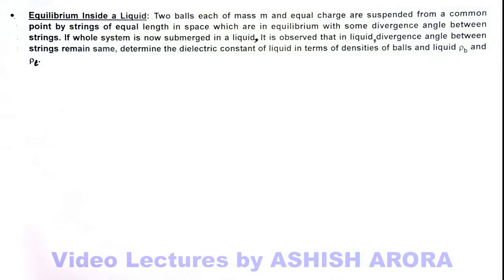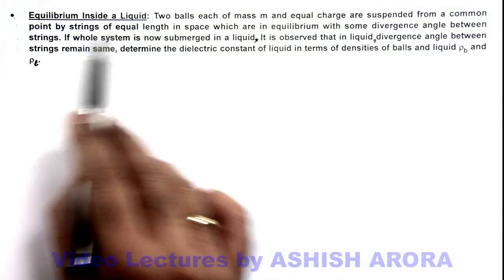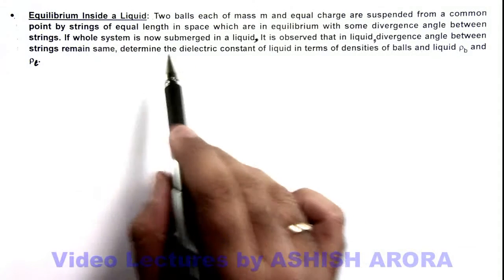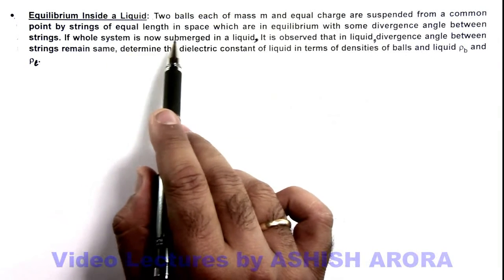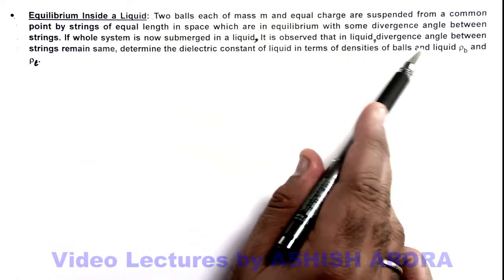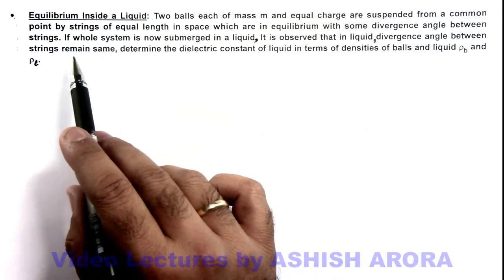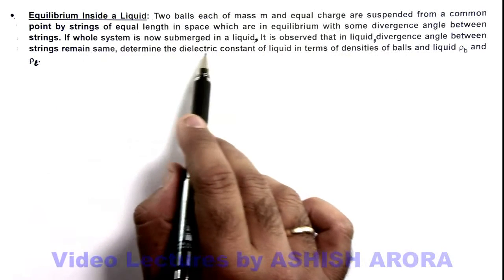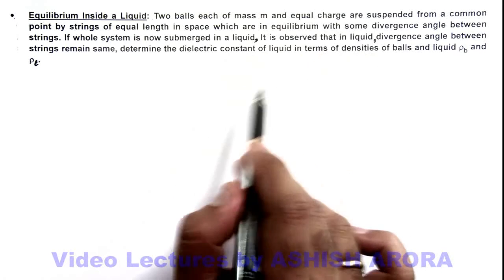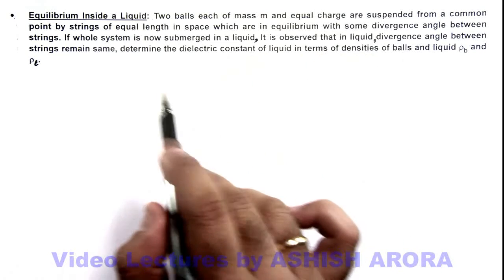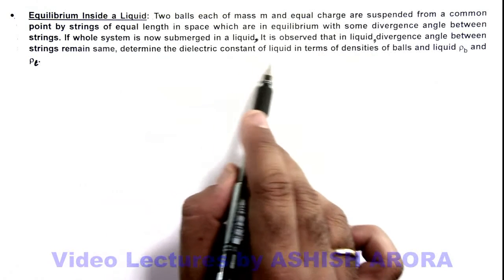In this illustration, we'll study about equilibrium inside a liquid. It is given that 2 balls, each of mass m and equal charges, are suspended from a common point by strings of equal length in space, which are in equilibrium with some divergence angle between the strings. If the whole system is now submerged in a liquid, it is observed that the divergence angle between the strings remains the same. We are required to determine the dielectric constant of the liquid in terms of densities of both balls and liquid, that is ρb and ρl.